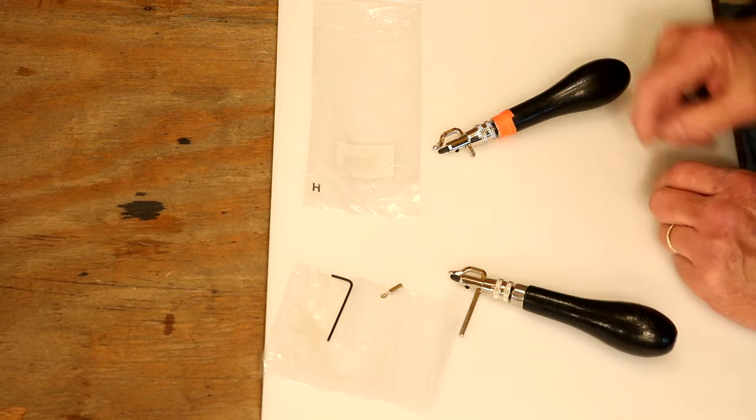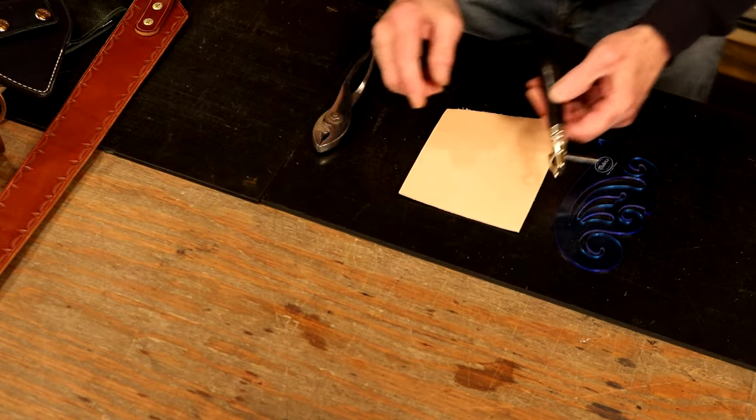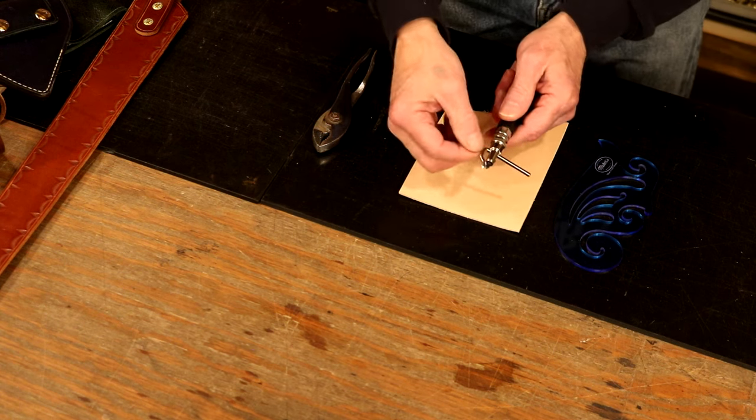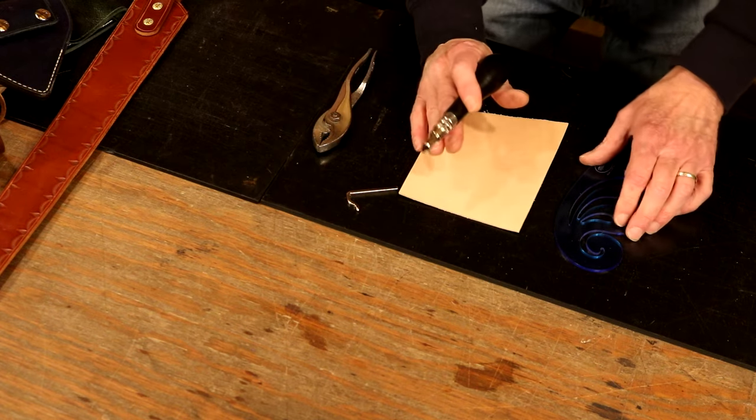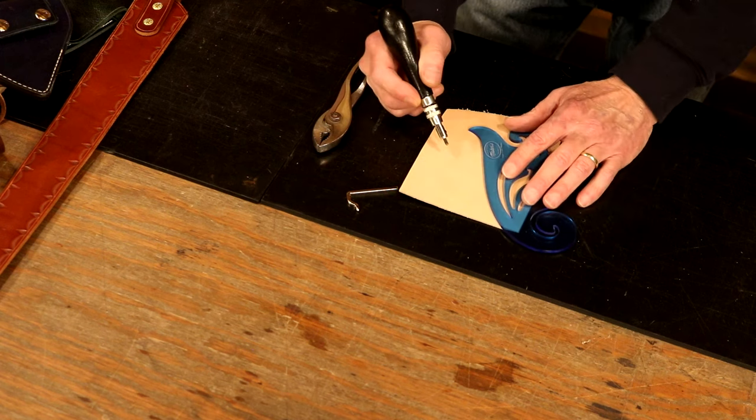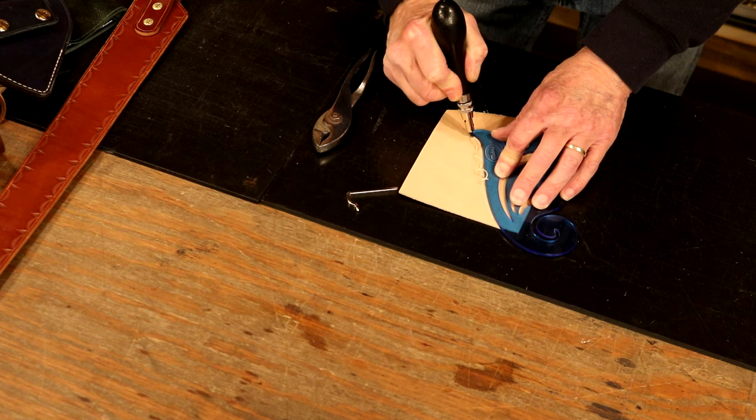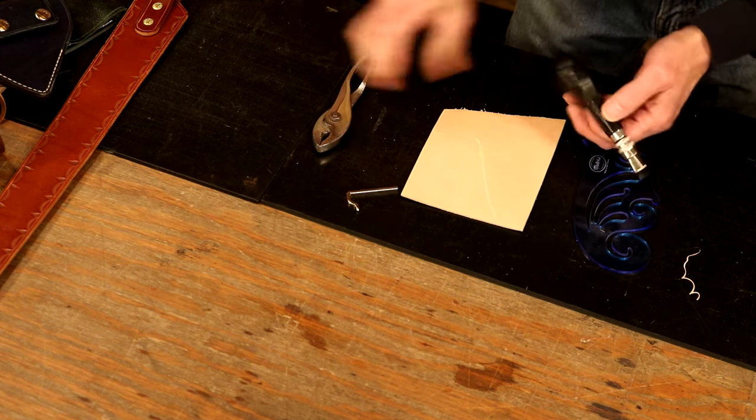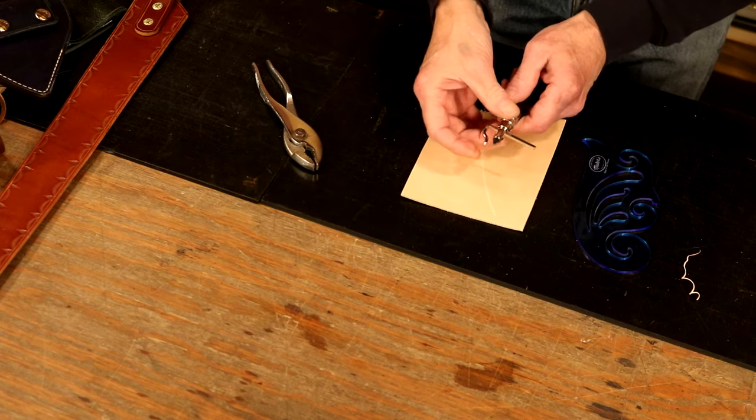I mentioned using our groover freehand. If we want to drop in a decorative stitch line within a project, all we have to do is take our guide arm out. Now, we have a freehand groover, but we don't have to go freehand by any means. We can create a template or simply use maybe a French curve. There we go. We are going to have a perfectly consistent stitch line.